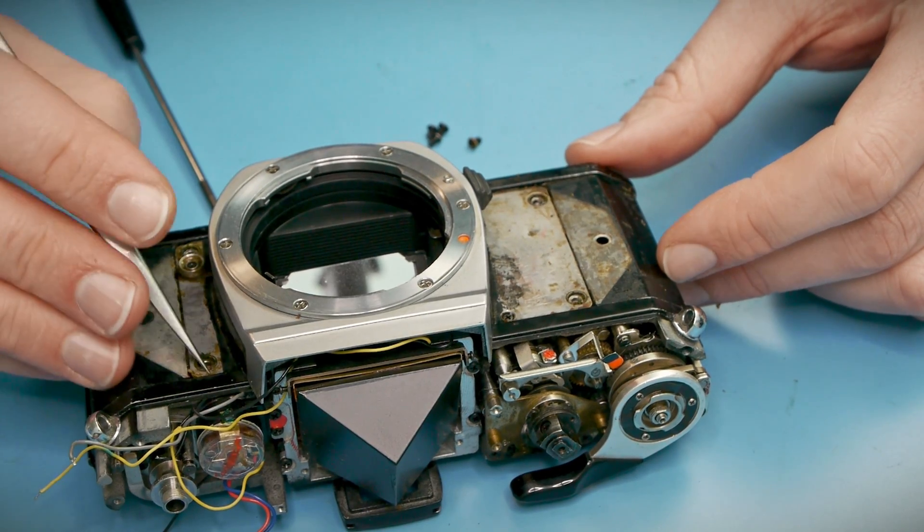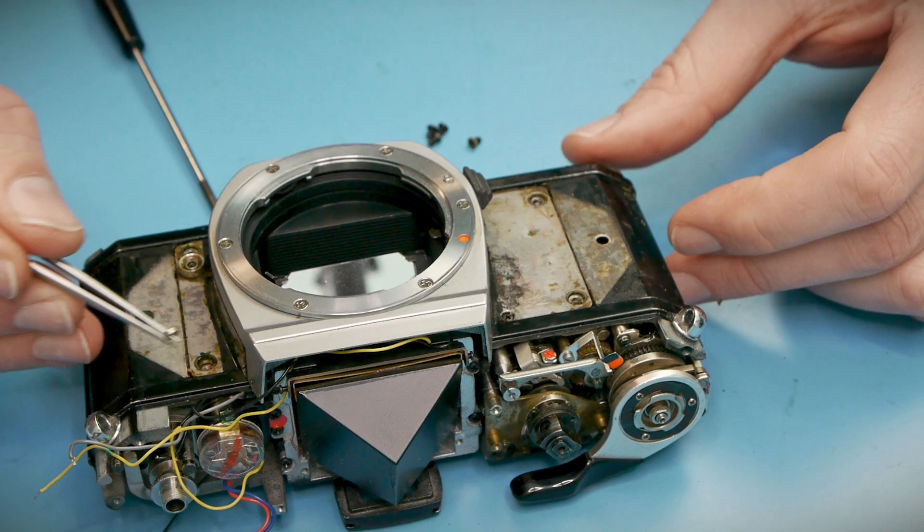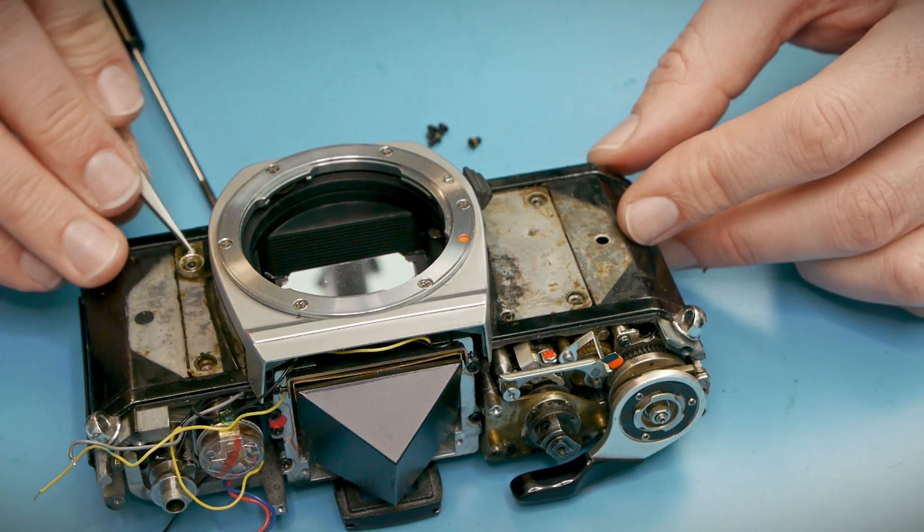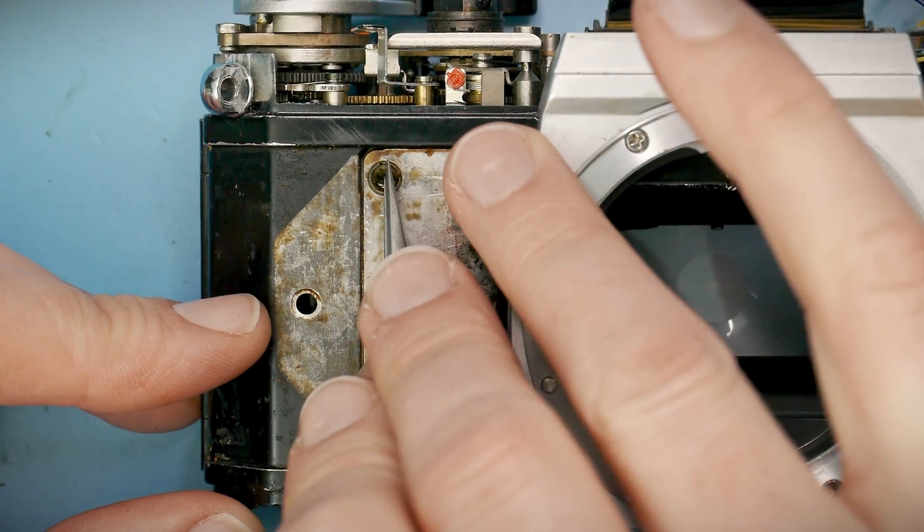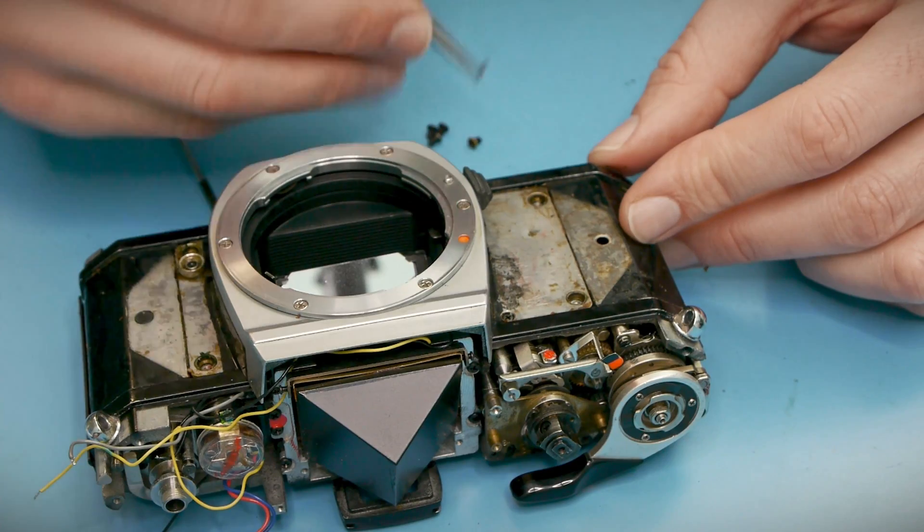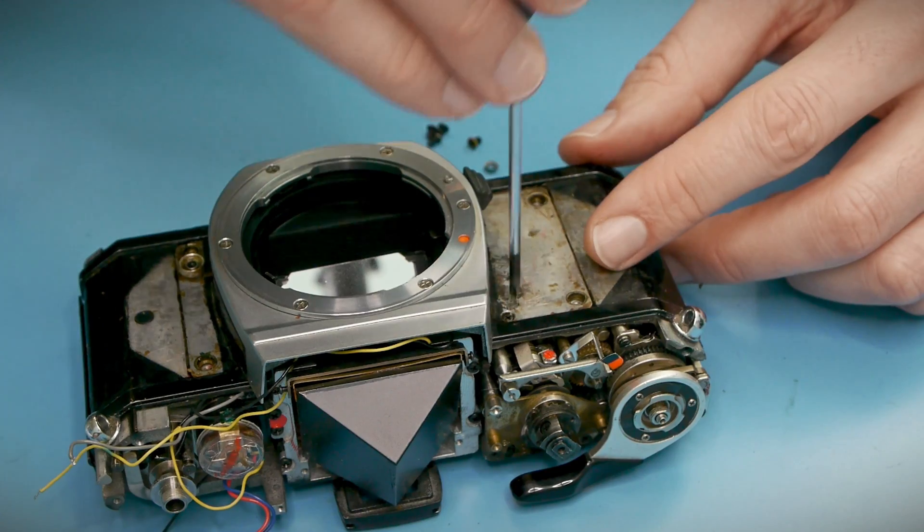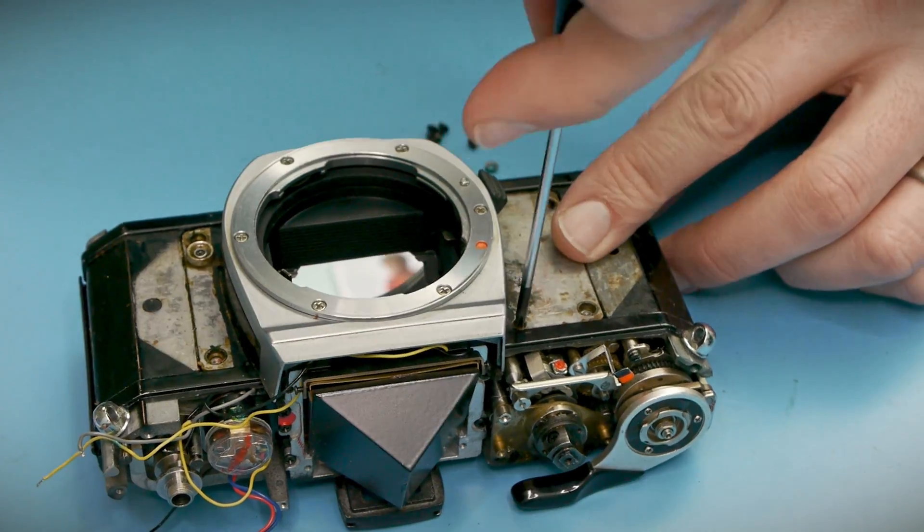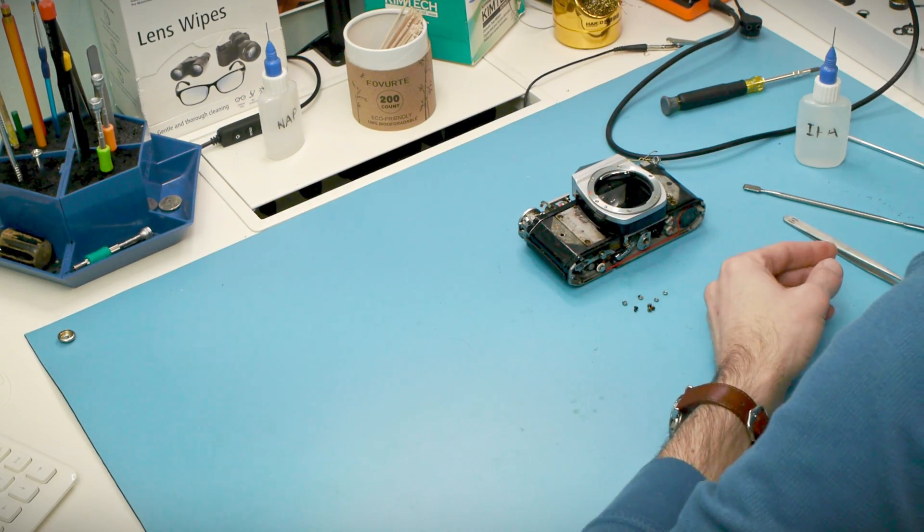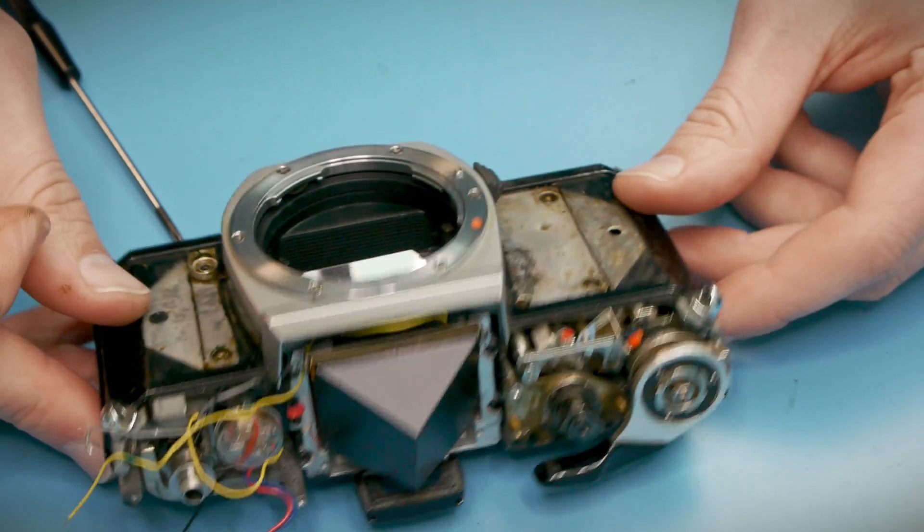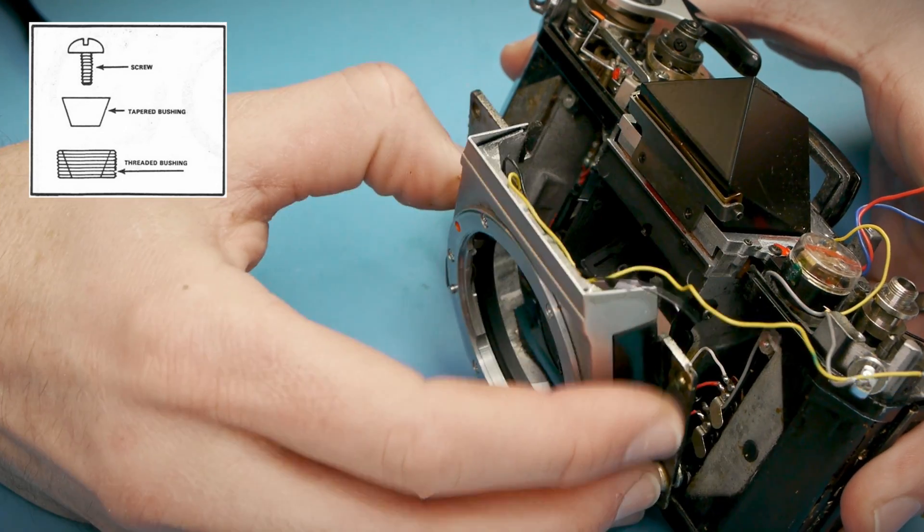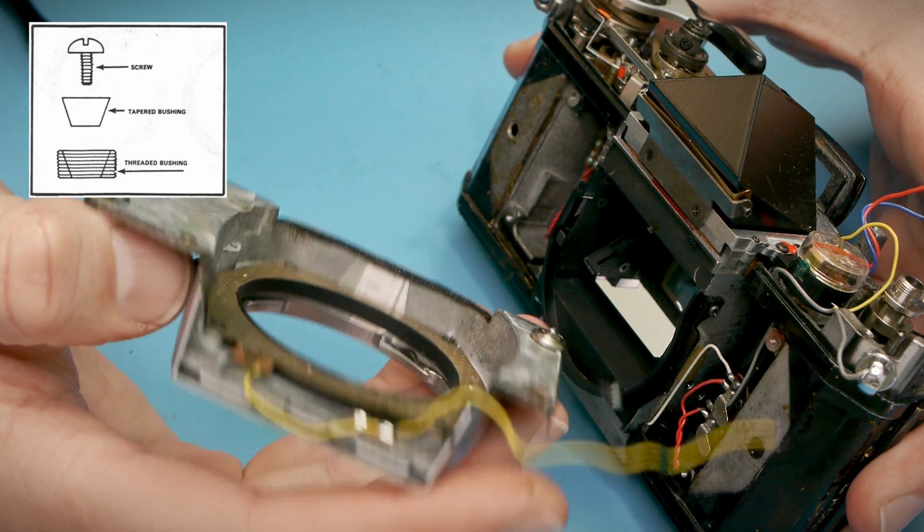In addition to the screws, there are little conical washers or bushings, and their unusual shape does serve a purpose. The holes that the screws sit in are also lined with threaded bushings. Turning a bushing adjusts how much it protrudes out the back of the plate, and consequently how far the plate sits from the camera. This was the mechanism used at the factory to dial in the flange distance. The bushings were turned until the lens mount was precisely parallel and precisely 45.46 millimeters from the film plane. The conical bushings act as locks. When they are installed and tightened down, they expand the threaded bushings, pushing them against the walls and preventing them from moving over time.